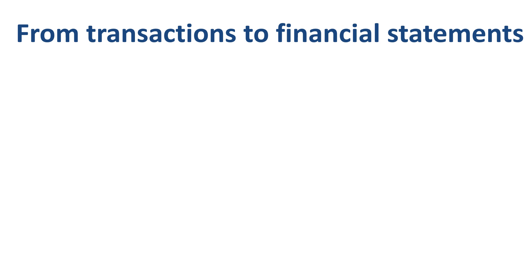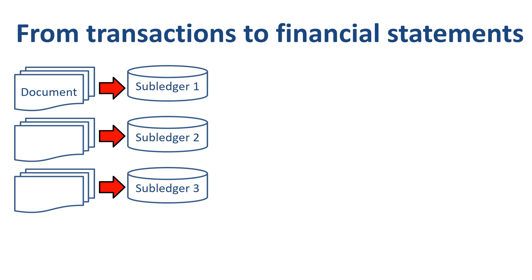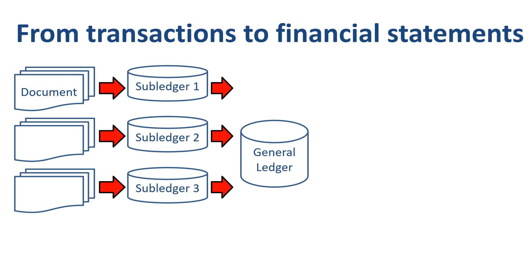Here's how that process works all the way from recording individual transactions to preparing financial statements. Transactions based on source documents are recorded in the appropriate subledger. The subledger activity is then posted as debits and credits to the appropriate accounts in the general ledger. The listing of the account names is called the chart of accounts. Getting a transaction into the general ledger can be done through a subledger, but also through a manual journal entry directly into the general ledger.